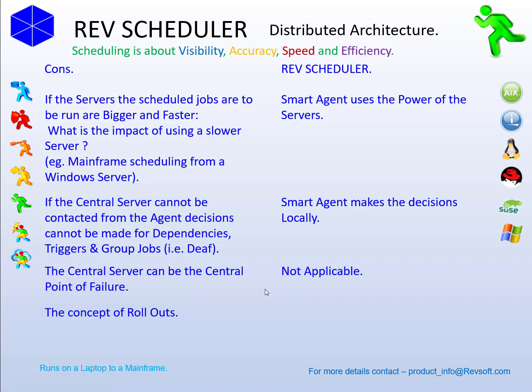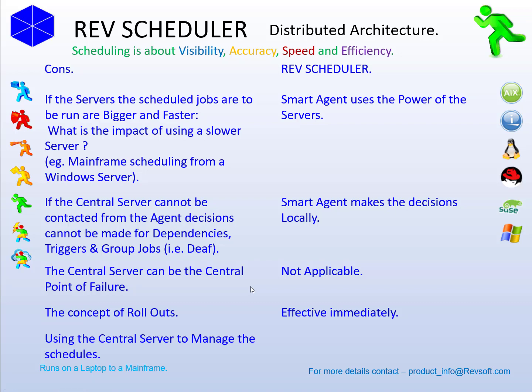If you have a job you'd like to run in the next two minutes, ten minutes, or later today, in the central model you'd have to define it on the central server and then roll it out — which was very painful. In RevSoft, changes are effective immediately. And if you want to hold a job, force run it, or manage schedules, you had to connect to the central server. In RevSoft, using RevView, you can have as many focal points as you want — not just a single focal point. If you've got four focal points managing all critical business schedules, you can go to any of them to hold a job, force run a job, or do whatever you need.